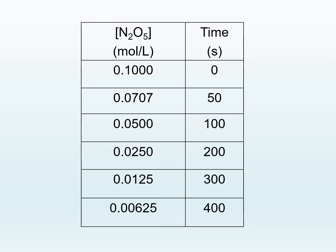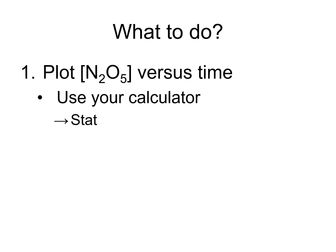You're going to plot this with your calculator. The steps are: use your calculator, press stat, then edit, and put the time values in column L1. In L2 or list 2, put your concentration of dinitrogen pentoxide.